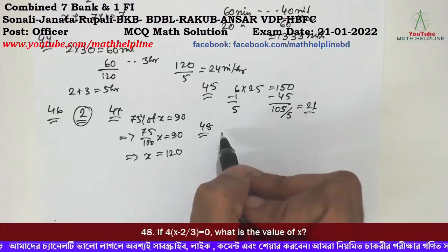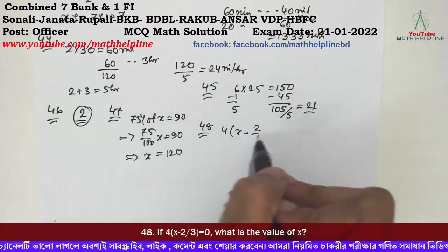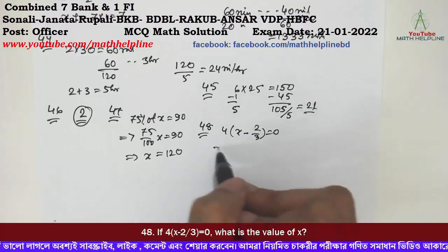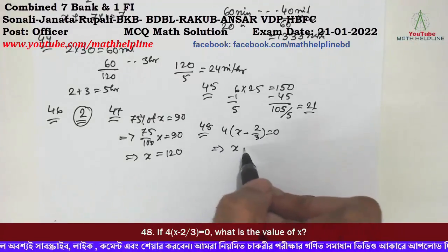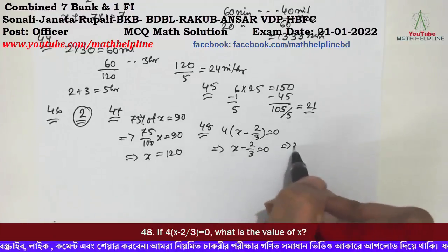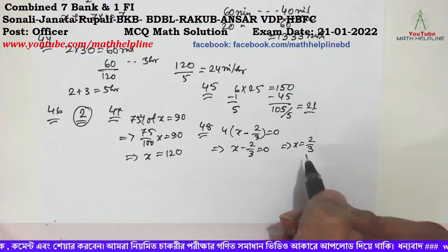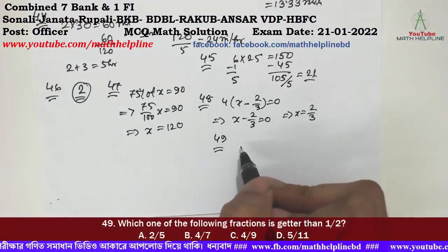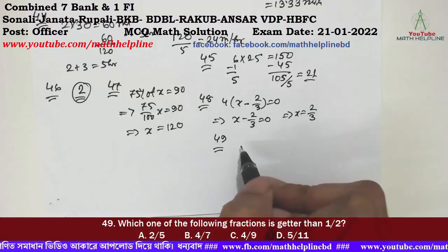What will be the value of x in the equation 2x minus 2 times 3 equals 0? So 2x equals 49. Solving gives the value of x.